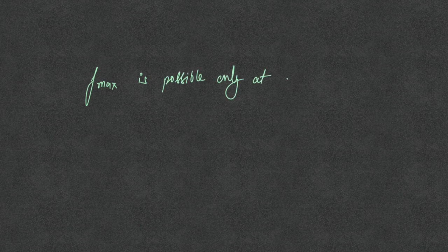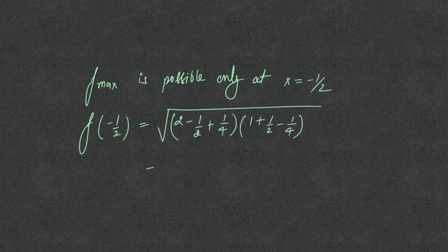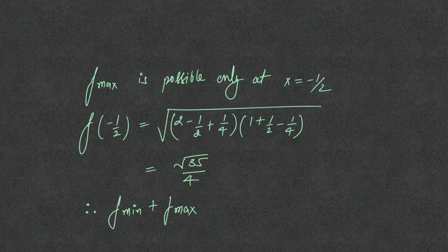Therefore f maximum is possible only at x equal to minus half. Substituting x equals minus half into f(x), we get the square root of 35 by 4. So f(minimum) plus f(maximum) equals 0 plus the square root of 35 by 4, giving the final answer as square root of 35 by 4.